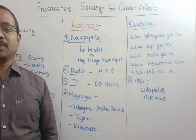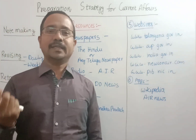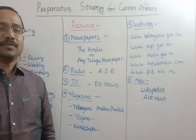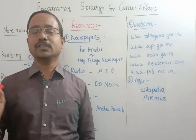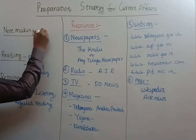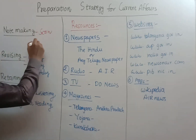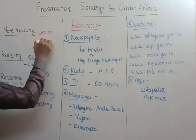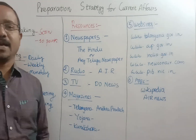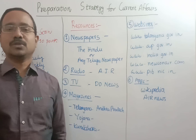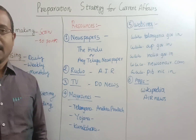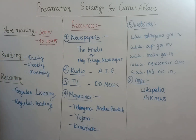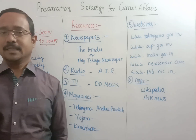After ticking these important points, you can take a notebook, maintain a register, or write down daily current affairs on loose sheets. After scanning and ticking the important items, you have to read the news completely. The first step in note-making is scanning the newspaper; the second step is reading the news completely and making your own notes in 10 points. For example, if today's newspaper has a news item about VVPAT, you have to read the complete news and write the essence in 10 points in your own notes.